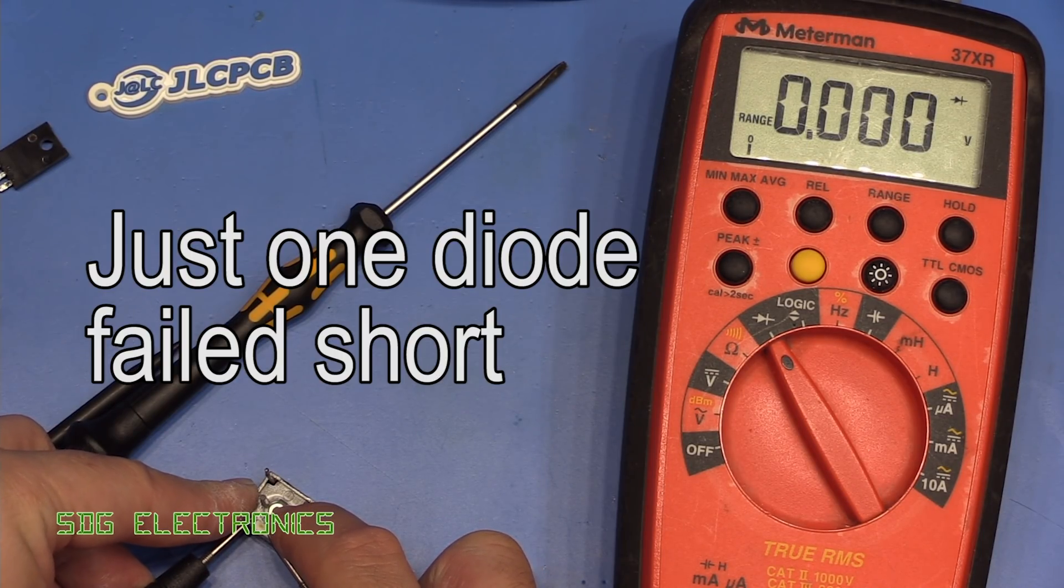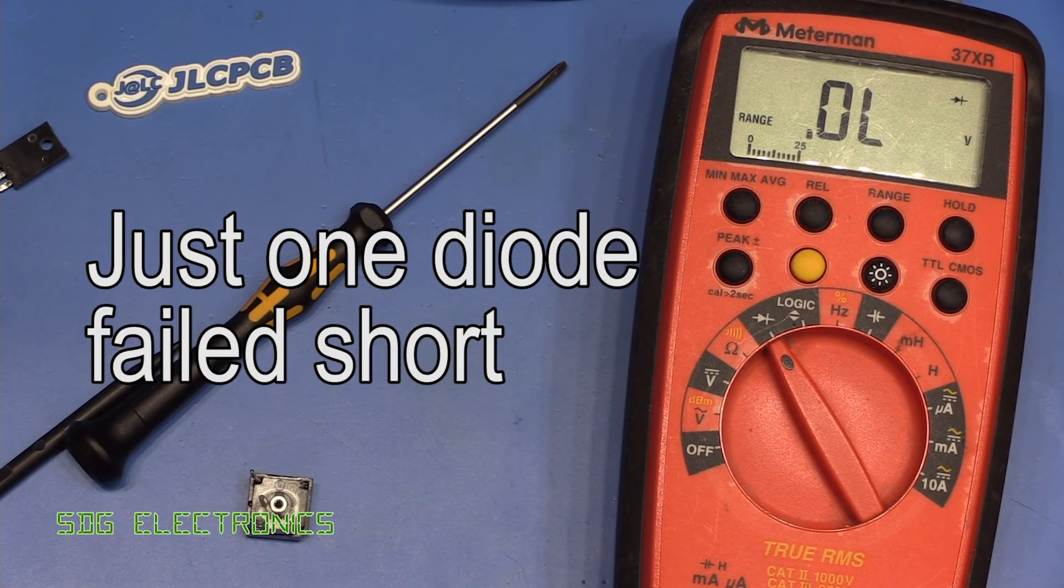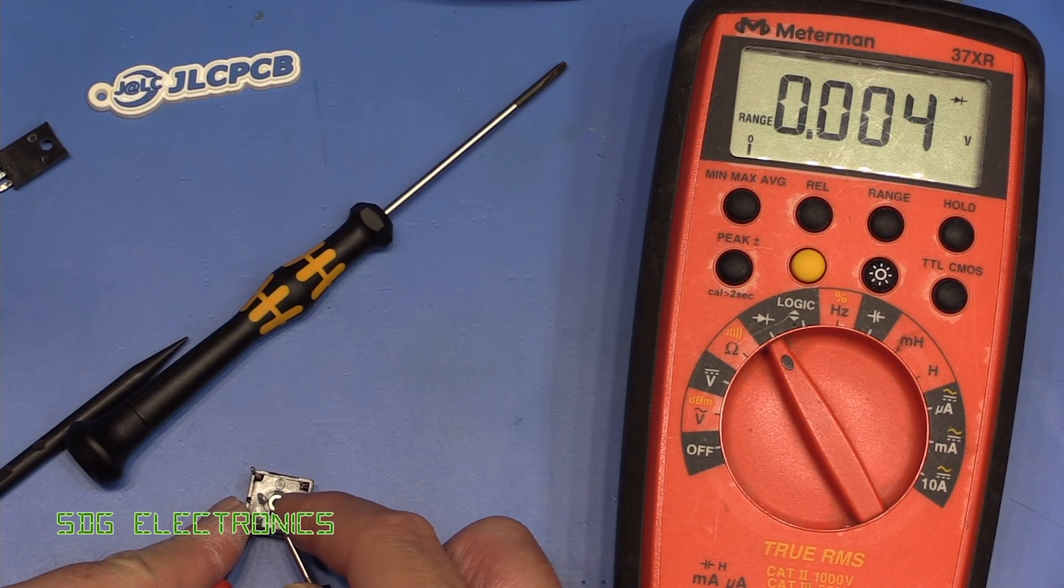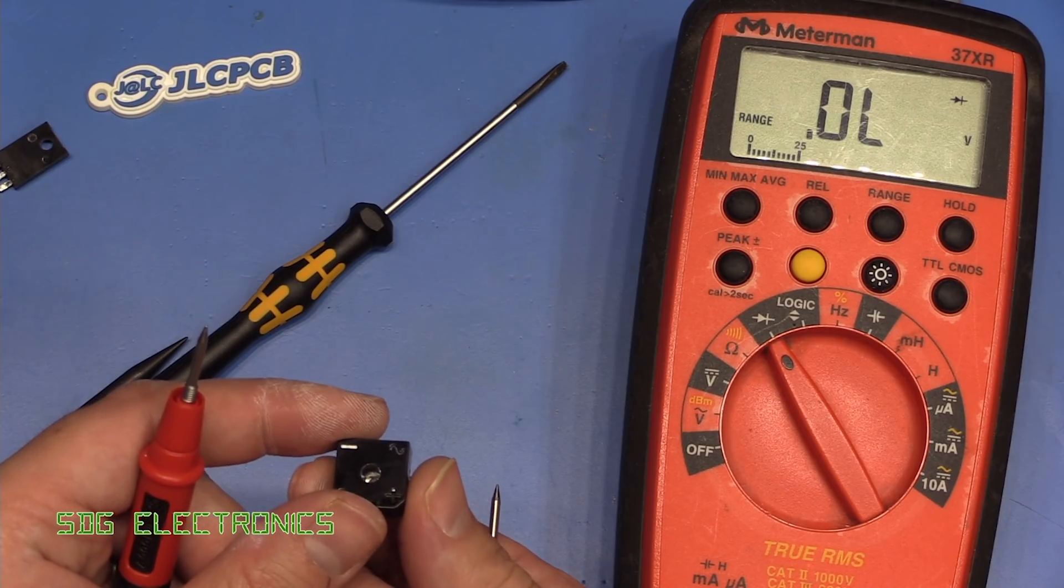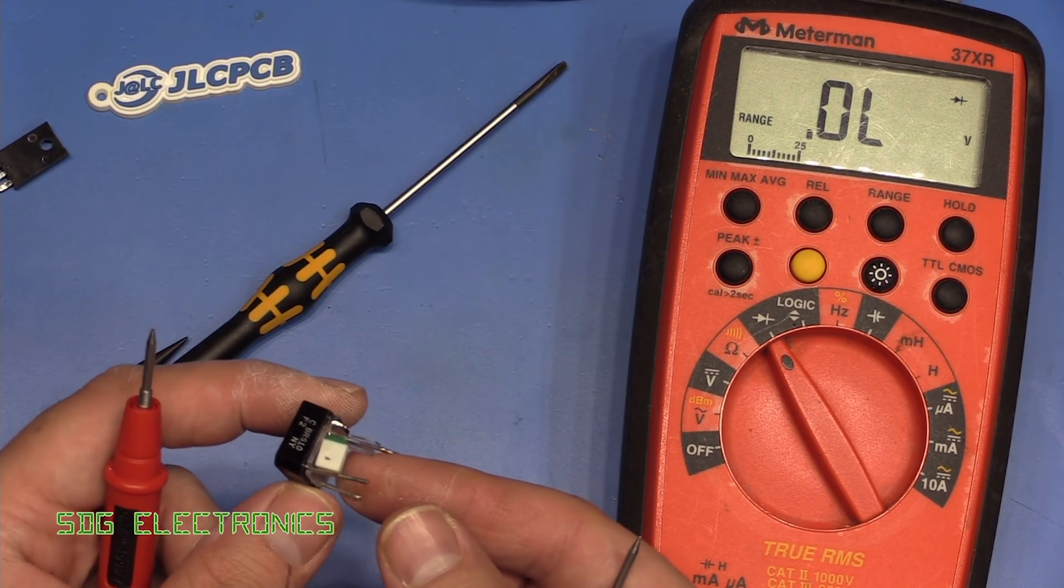And yeah, a dead short. We should be able to flip the polarity around and it'll still be short. Yeah, there we go. So that's what's causing the problem. And so we've got a faulty bridge rectifier. So I'll see if I've got any in this particular size. I'm not sure if I do.